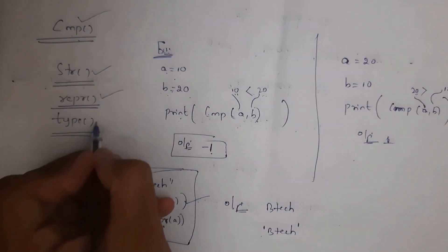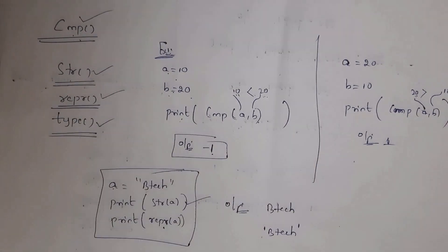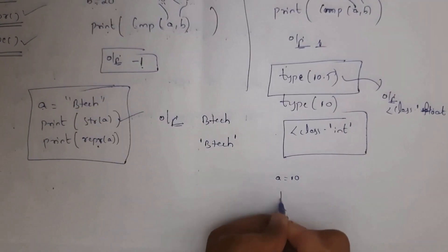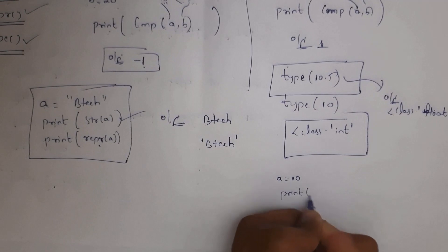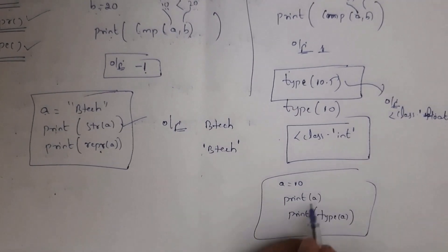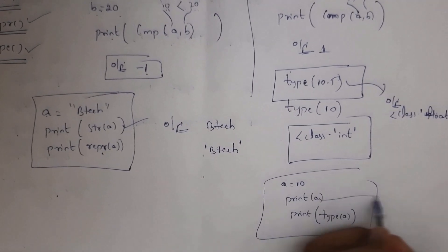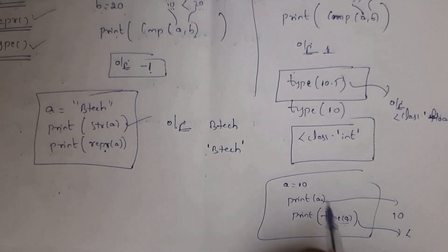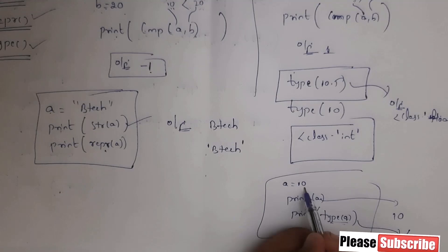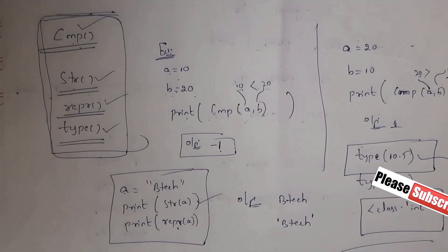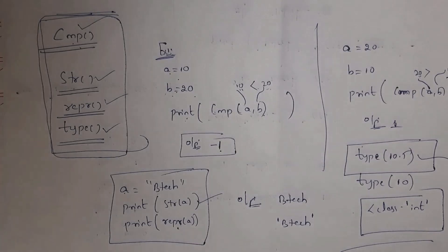The type function displays the data type of a given value. For example, a=10: print(type(a)) outputs class int, because 10 is an integer. These are the four standard type built-in functions in Python: cmp, str, repr, and type.